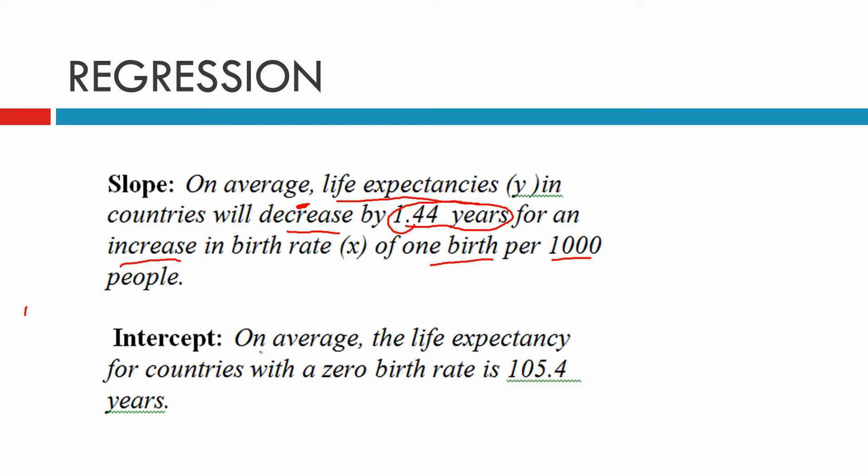The intercept. On average, the life expectancy for countries with a 0 birth rate is 105.4 years, because that's what our equation had.